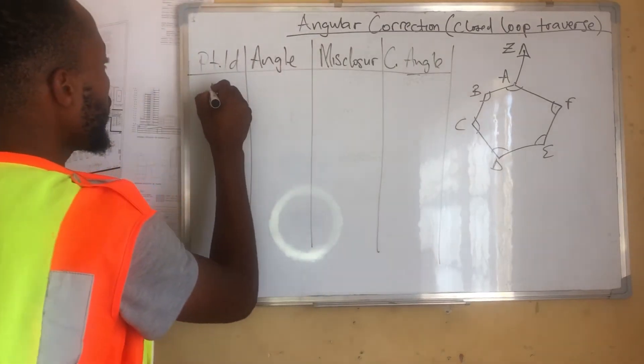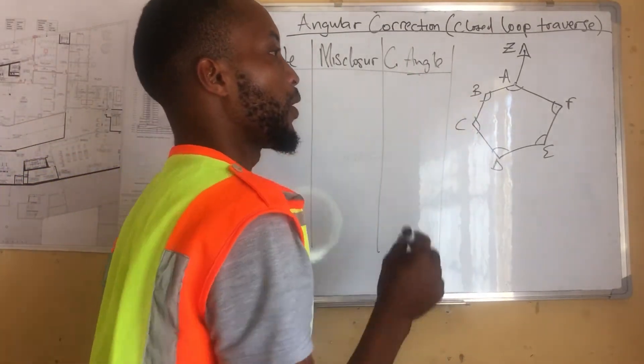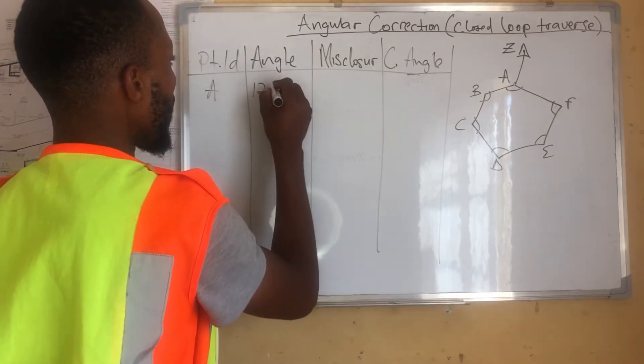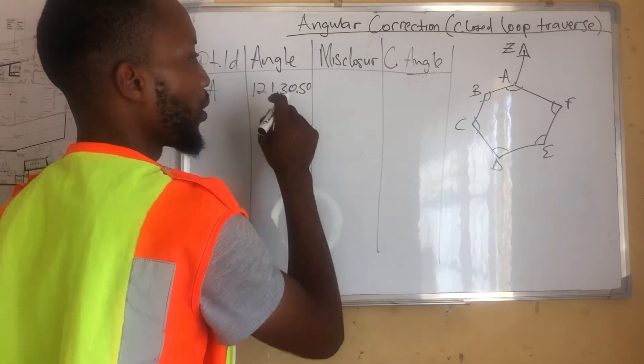And the corrected, C for corrected angle. A, that's our first angle, this one. We have 121, 30, 50. That's our angle A.